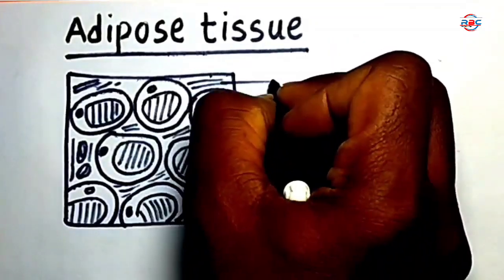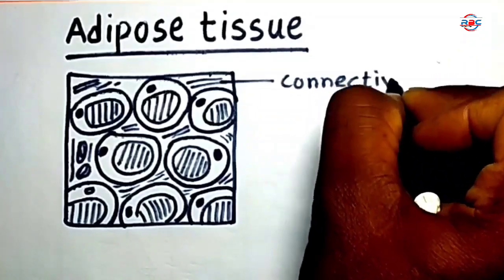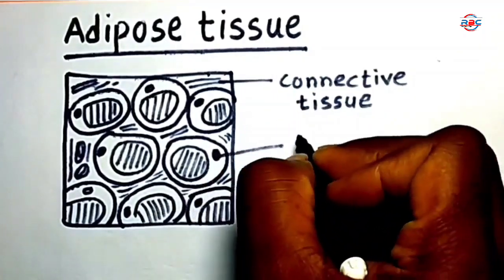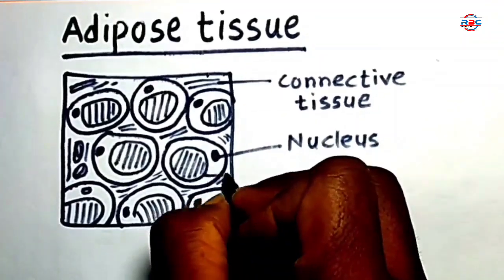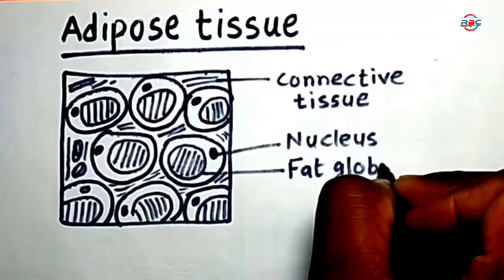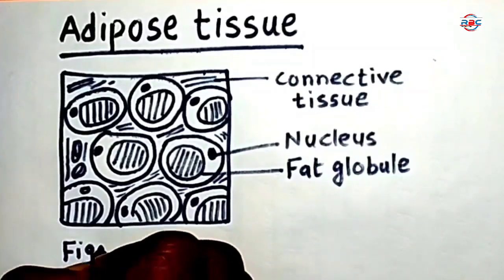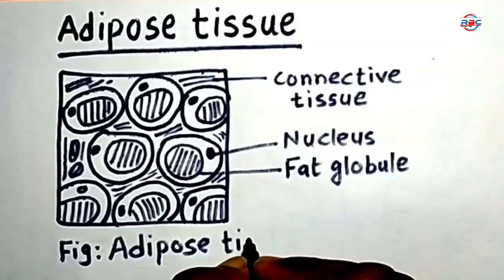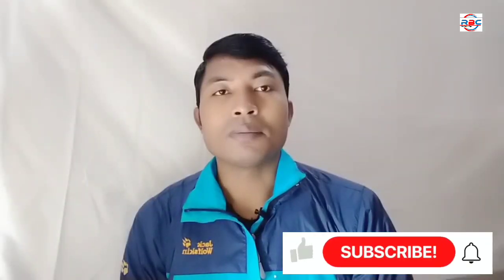This is called Connective Tissue. This is called Nucleus. This is called Fat Globule. Finally, write down the name of the figure: Adipose Tissue.